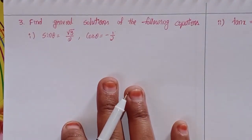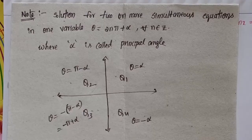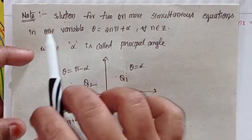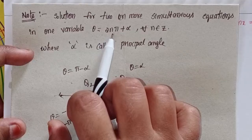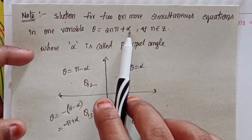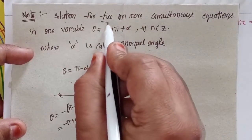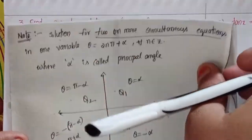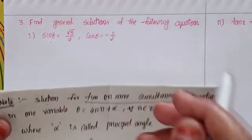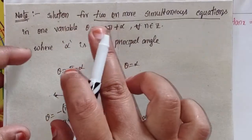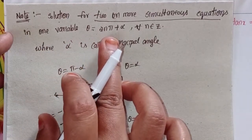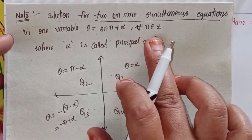Before I explain the solutions, one key note point: the solution for two or more simultaneous equations in one variable theta is equal to 2nπ + α, for all n belonging to Z, where α is called the principal angle. So we have two simultaneous equations involving sin and cos.